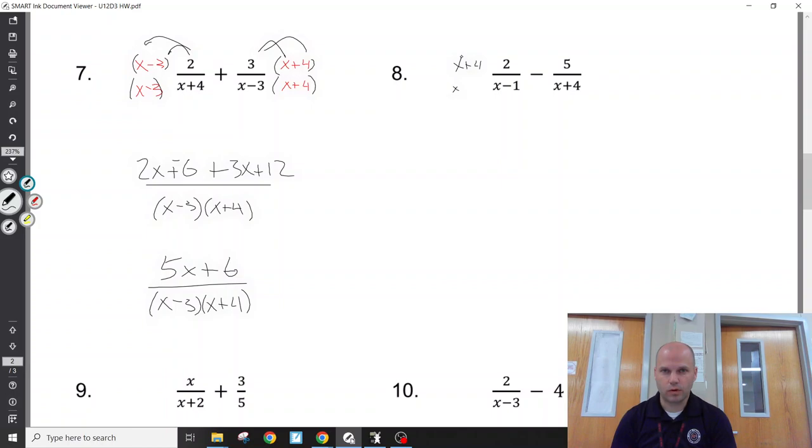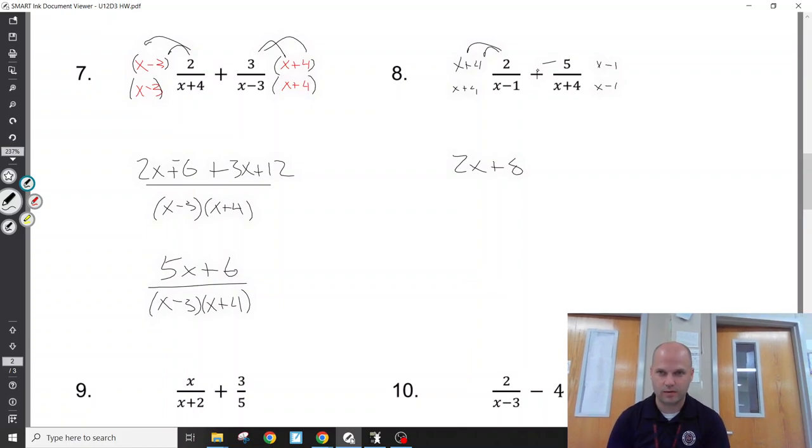So here, x plus 4, x plus 4, x minus 1, x minus 1. So the common denominator is x plus 4 times x minus 1. Distribute this. 2x plus 8. Now be careful. I'm going to be subtracting this. So either we need to subtract 5x minus 5, or what I like to do is distribute the negative to just the top. It's not the top and the bottom, because then you'd be giving it two negatives. It makes this entire fraction negative. And then distribute the negative 5x to the x and the negative 1. Your common denominator. Combine your like terms in the numerator.